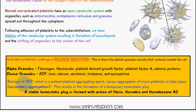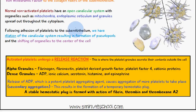Release of ADP, which is a potent platelet aggregating agent, causes the platelets to stick together. It causes aggregation of more platelets — known as secondary aggregation — because the initial number of platelets has already bound onto the subendothelium via von Willebrand's factor. This secondary aggregation adds another layer onto those already bound, resulting in the formation of a temporary hemostatic plug.